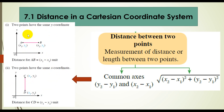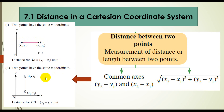Maknanya kalau contoh dekat sini, kalau awak tengok kat sini A and B — straight line. Kalau straight line, maknanya salah satu point dia adalah sama. Contoh dekat sini Y satu — ni kan paksi Y, ini adalah paksi X. Maknanya dekat sini paksi Y dia adalah sama. Contoh A adalah 5, B pun paksi Y dia mestilah 5 juga, sebab dia straight line pada paksi Y.